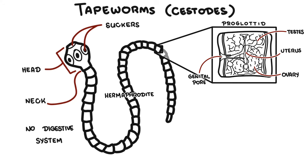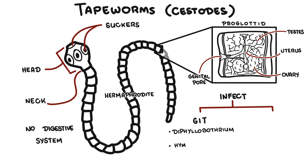The neck is an unsegmented region with high regenerative capacity. If treatment does not eliminate the neck, the entire worm can regenerate and grow. The life cycle of tapeworms involves one, two, or three intermediate hosts. Tapeworms that infect the intestines include diphyllobothrium, hymenolepis, and taenia. Tapeworm genera that infect other tissues include echinococcus.